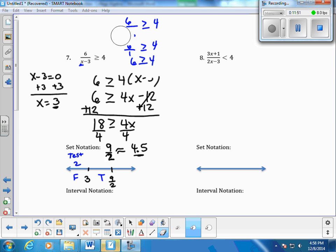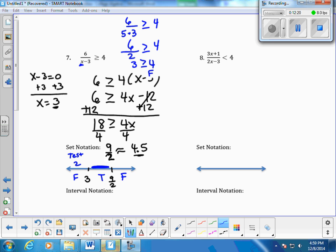And then, we want to test the number to the right of 4.5. So, let's just test 5. 5 minus 3. So, 6 divided by 5 minus 3 is 2. So, 6 divided by 2 is 3 is greater than or equal to 4, and no, that's false. So, my inequality is true here. Because it's a bracket, I mean, because there's a bar, I'm going to have brackets. So, interval notation would be bracket 3 to bracket 9 halves.